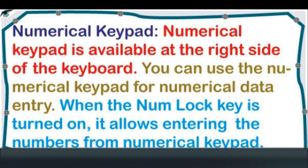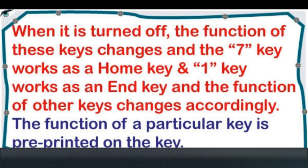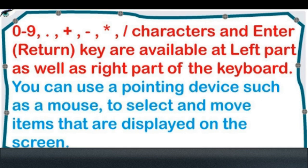Numerical Keypad is available at the right side of the keyboard. You can use the numerical keypad for numerical data entry. When the Num Lock key is turned on, it allows entering numbers from the numerical keypad. When it is turned off, the function of these keys changes: the 7 key works as a Home key, the 1 key works as an End key, and other keys change accordingly. The function of a particular key is pre-printed on the key. 0 to 9, plus, asterisk, slash characters, and Enter/Return key are available at both the left part and right part of the keyboard.